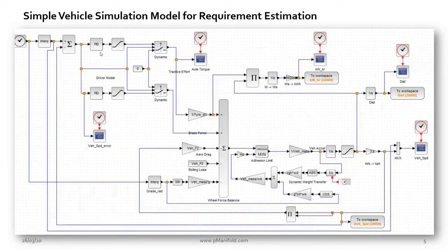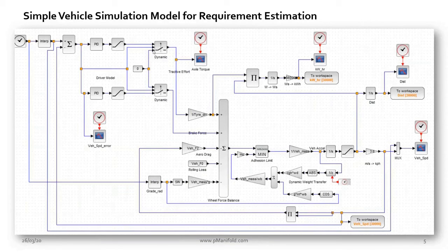Apart from the vehicle model, we also need a driver model in the simulation. The driver model is a PID controller working on the error between target speed and actual speed. What we need is a target speed — a time versus speed profile — and the actual speed calculated at every time step. Based on that, the driver model manipulates the traction or braking required to achieve that particular speed. Using such simple functional models, we can derive requirements from the vehicle level to the subsystem level.